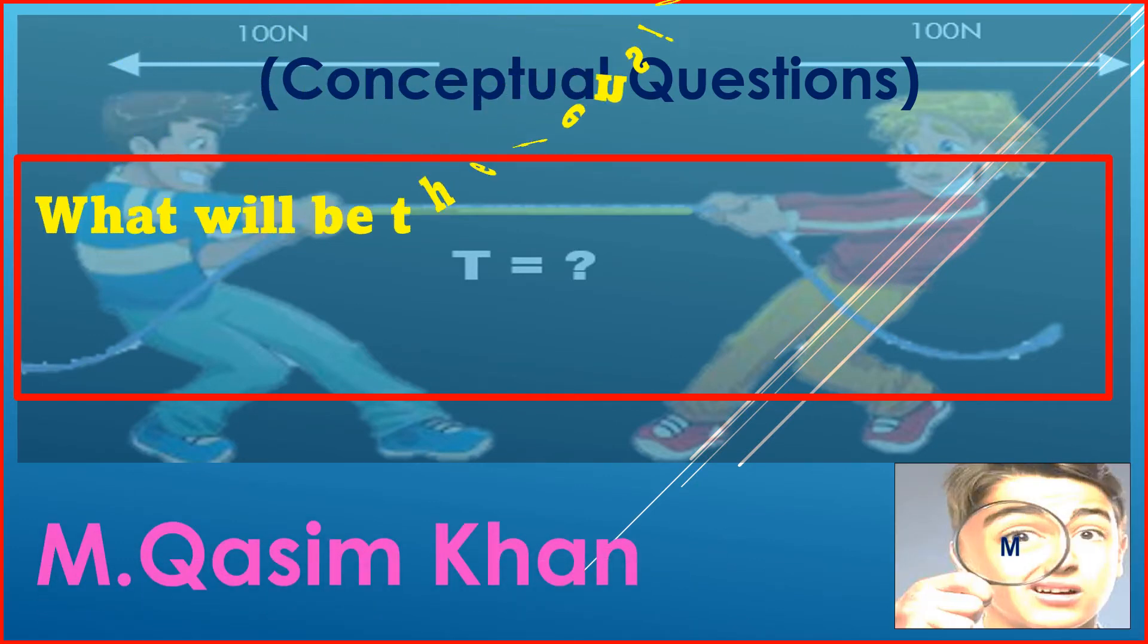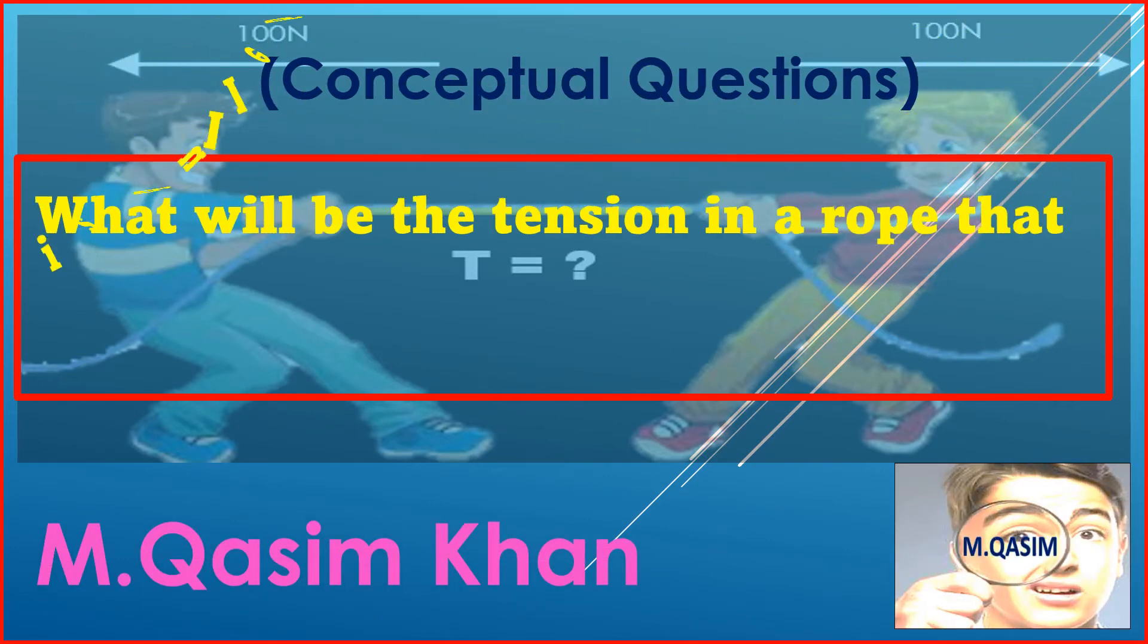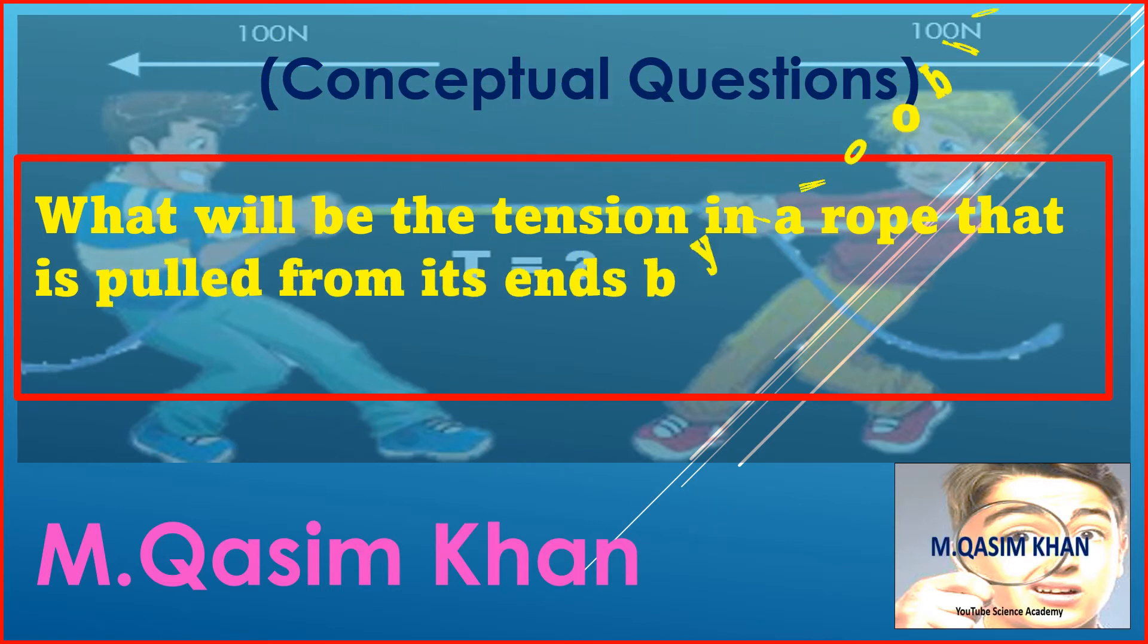What will be the tension in a rope that is pulled from its ends by two opposite forces, 100 Newton each?